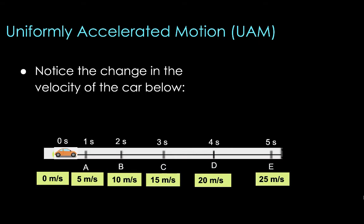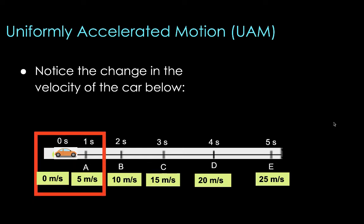To illustrate that further, let's look at the scenario where we have a car moving from point A to point E in the state of UAM. How do you visualize uniformly accelerated motion? We're going to analyze the motion of this car per one-second interval. From zero to one second, the car's velocity changes from zero meters per second up to five meters per second, meaning it gains five meters per second within a one-second interval.